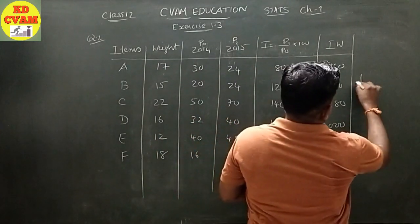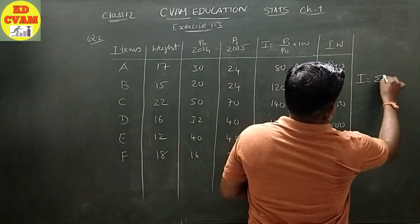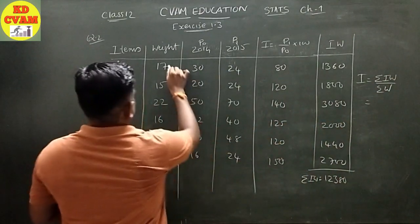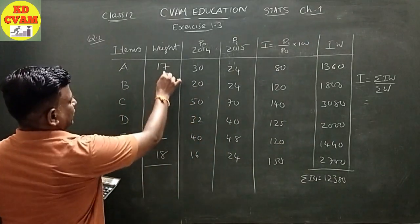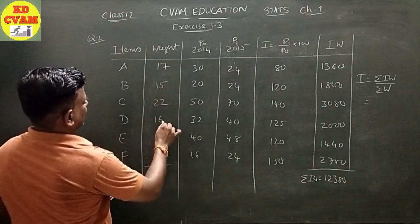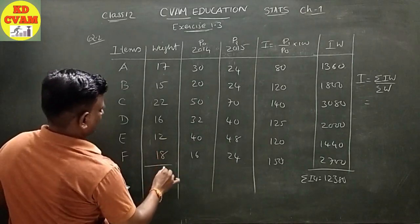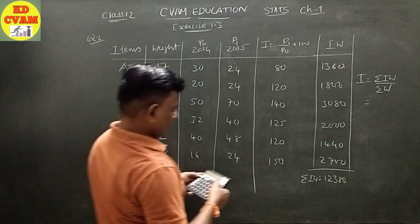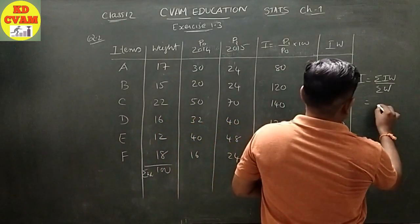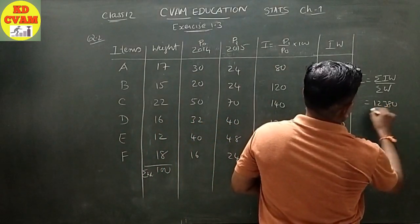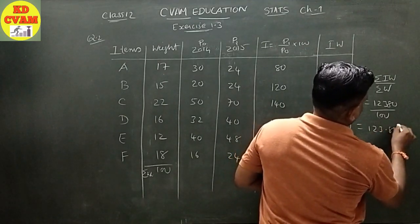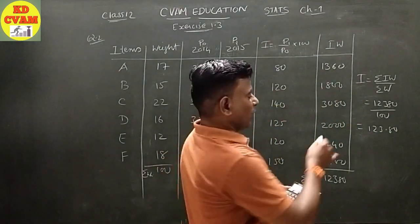Sigma IW equals 2700 plus 1440 plus 2000 plus 3080 plus 1800 plus 1360, which equals 12,380. Sigma W equals 100. Therefore I equals sigma IW upon sigma W, which is 12,380 upon 100 equals 123.80.